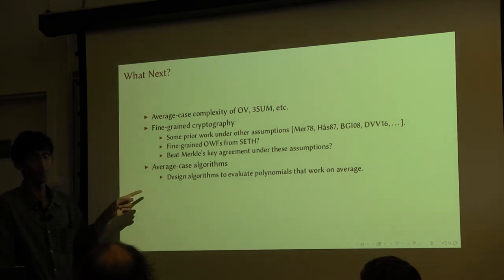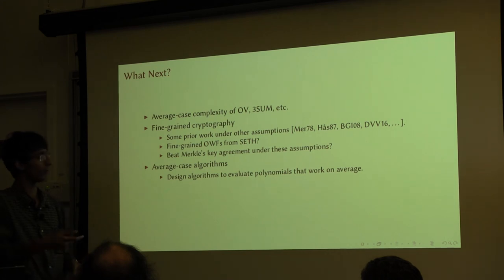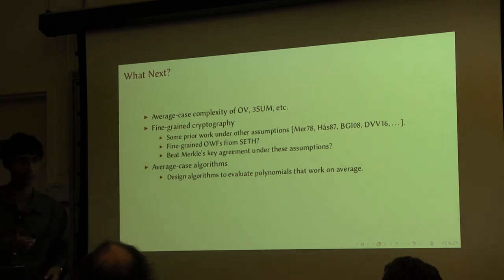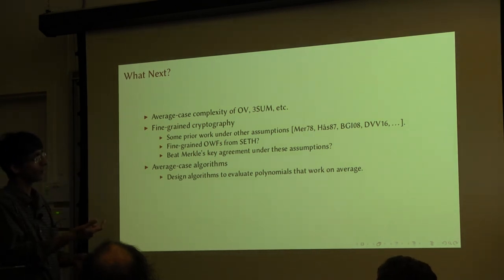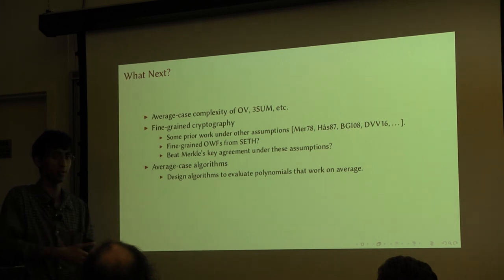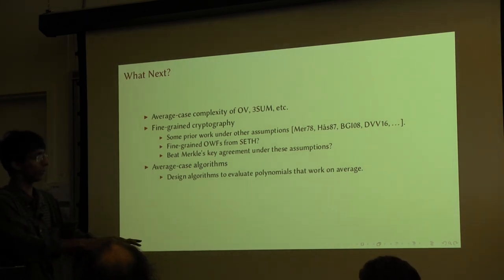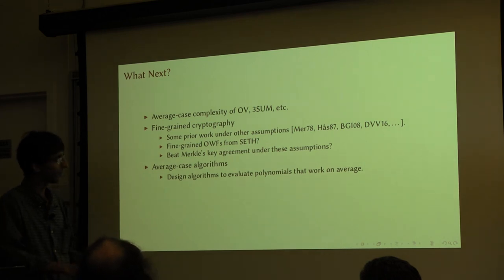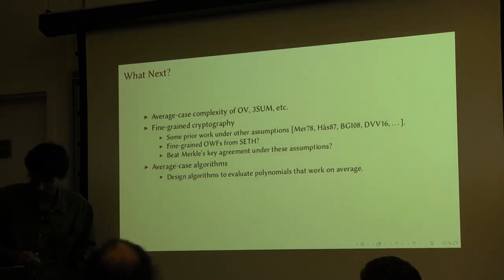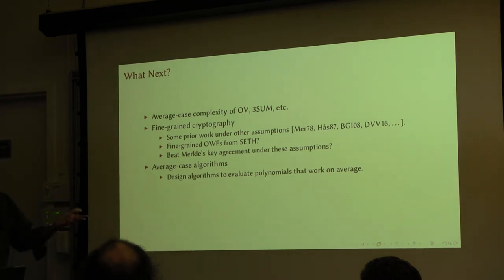And this is the other thing that I mentioned in the beginning that I said I would be in a better position to explain later. In algorithm design, for example: suppose you wanted to design an algorithm for the orthogonal vectors problem. Because of this reduction, it is sufficient to design an algorithm for the polynomial that comes out that works on average — you don't have to work on all the inputs. As long as it works on average, you can go back through the reduction and get a worst-case algorithm for orthogonal vectors.